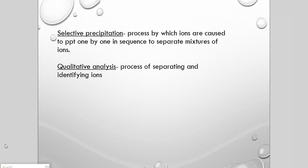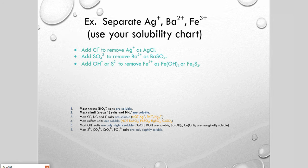Next I want to discuss selective precipitation. We can remove ions from a solution one by one using solubility rules. Qualitative analysis is the process of separating and identifying ions in a solution, and it hinges on selective precipitation. For example, to separate a solution containing silver, barium, and iron(III) ions, we look at solubility tables to find a path for removing each ion.